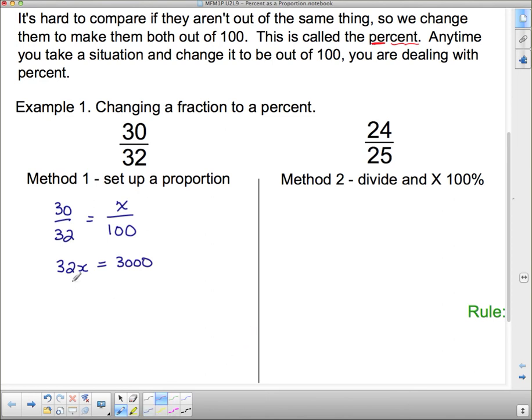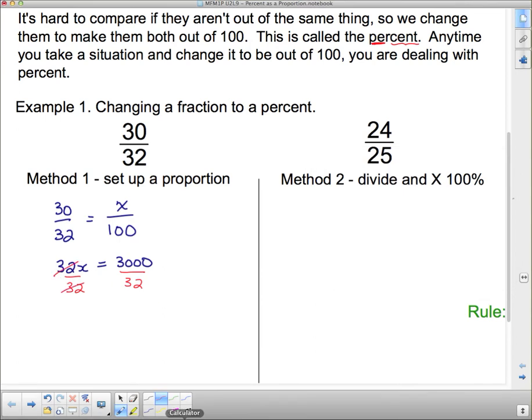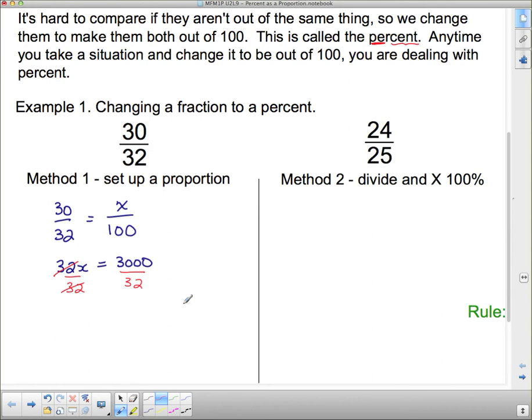When we go the other direction, 30 times 100 gives us 3000. Now to get our answer, we divide by 32 on both sides. When we divide by 32 on both sides, the 32s are gone on this side. On this side we have 3000 divided by 32, which is 93.75. So x equals 93.75. This person got 93.75%.